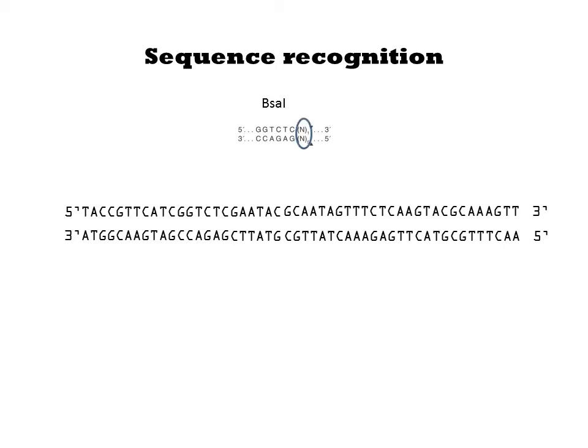In this notation, N represents any base pair and the subscript indicates how many bases are present. BsaI binds to GGTCTC sites and cuts 1 base pair away on the top strand and 5 base pairs away on the opposing strand. It cuts on the 3' side of the recognition sequence, GGTCTC, regardless of the downstream sequence.